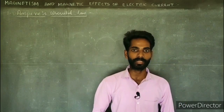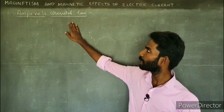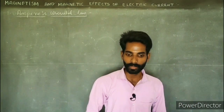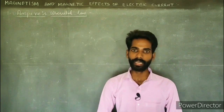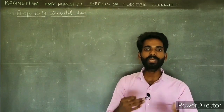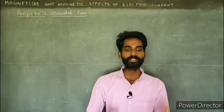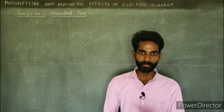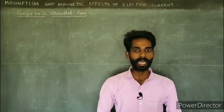We can apply the Ampere circuit in order to calculate the magnetic field. So what we are relating is the magnetic field and the current. In the Ampere circuit, current and magnetic field are related — that is the Ampere circuit.